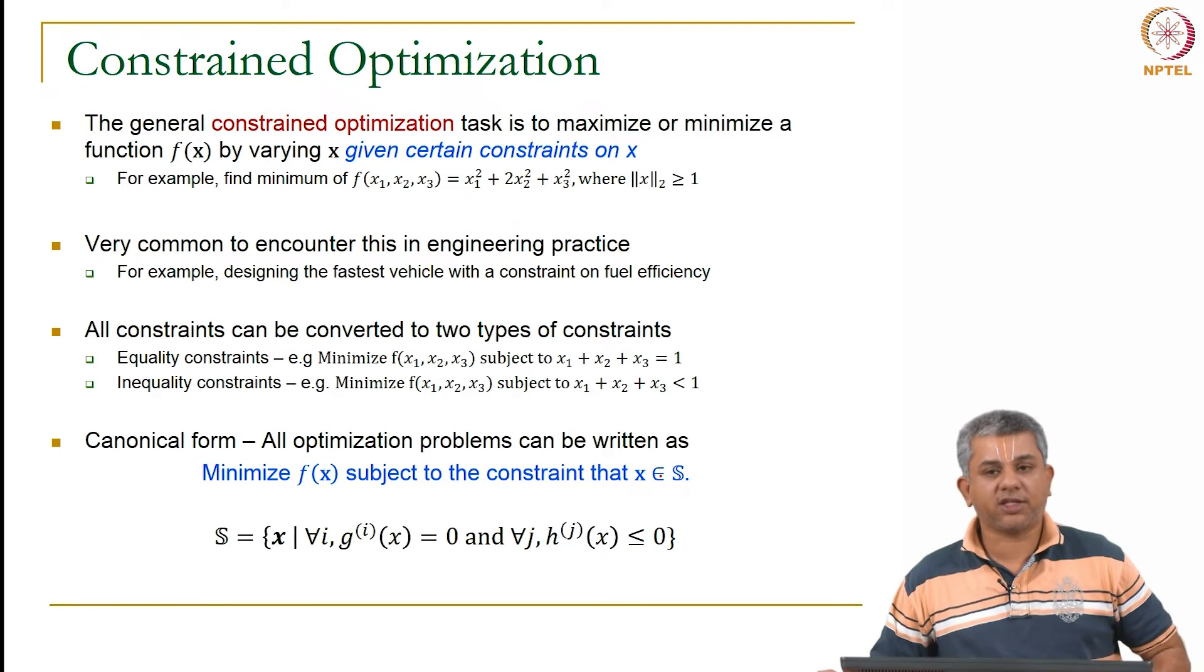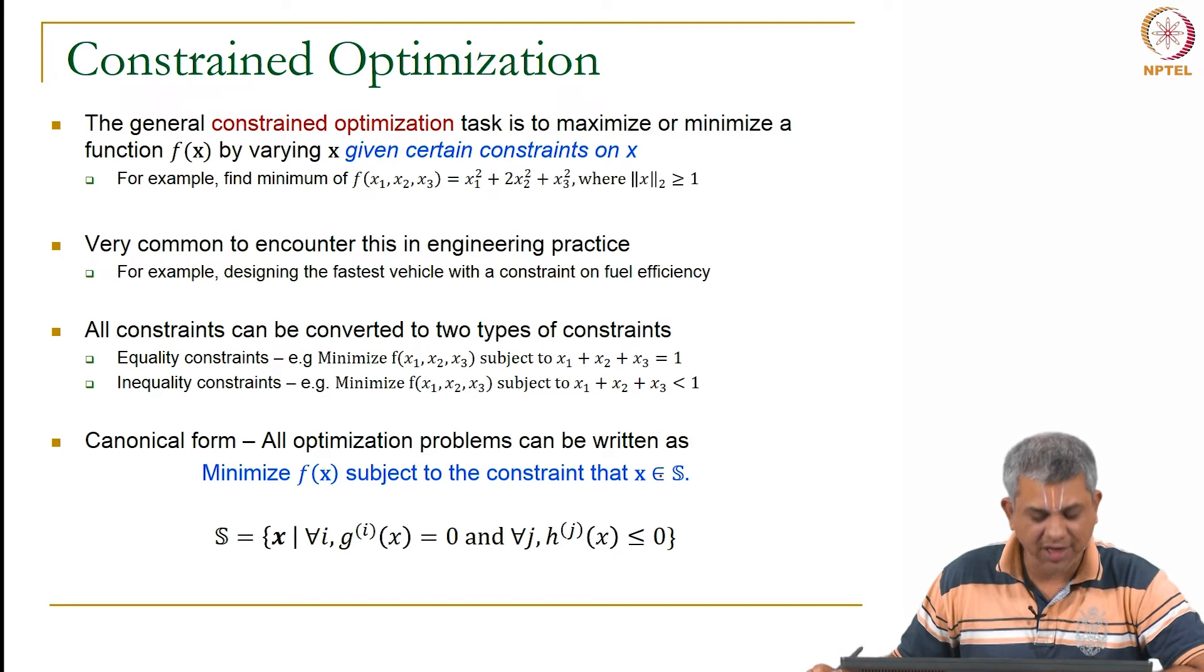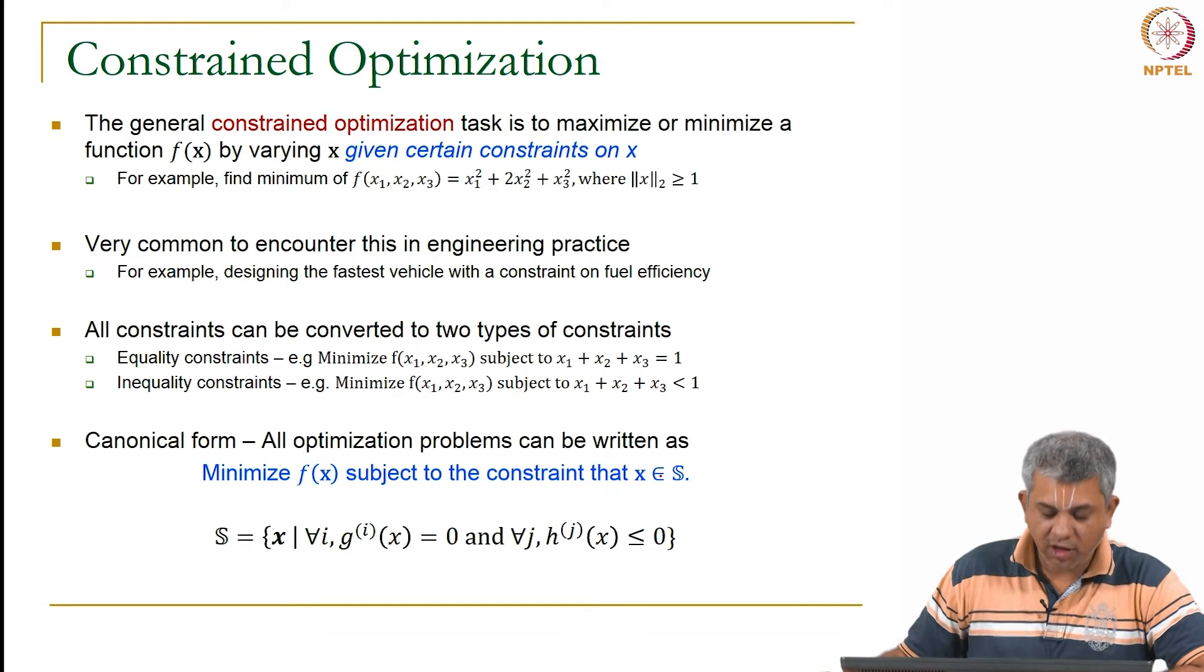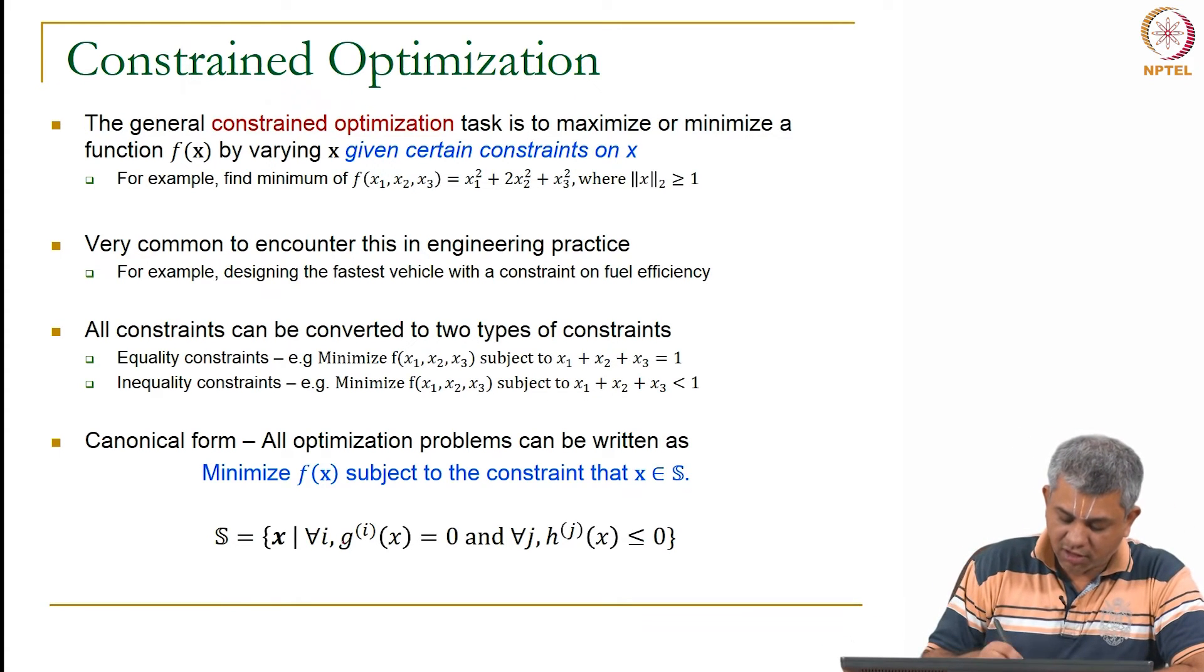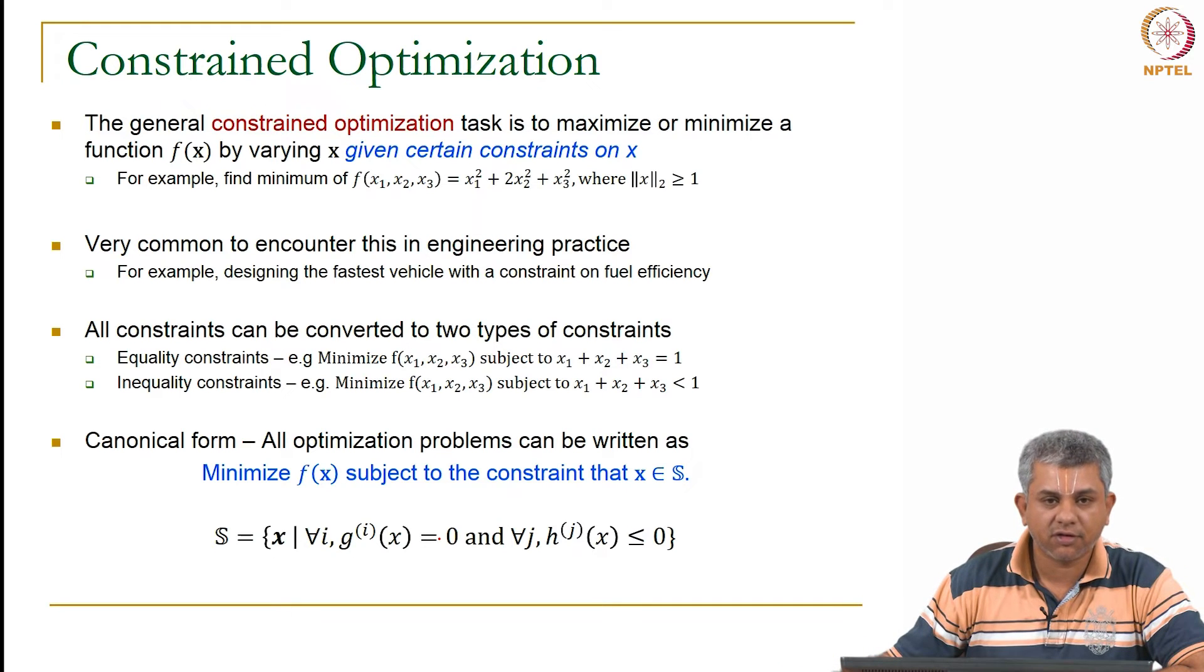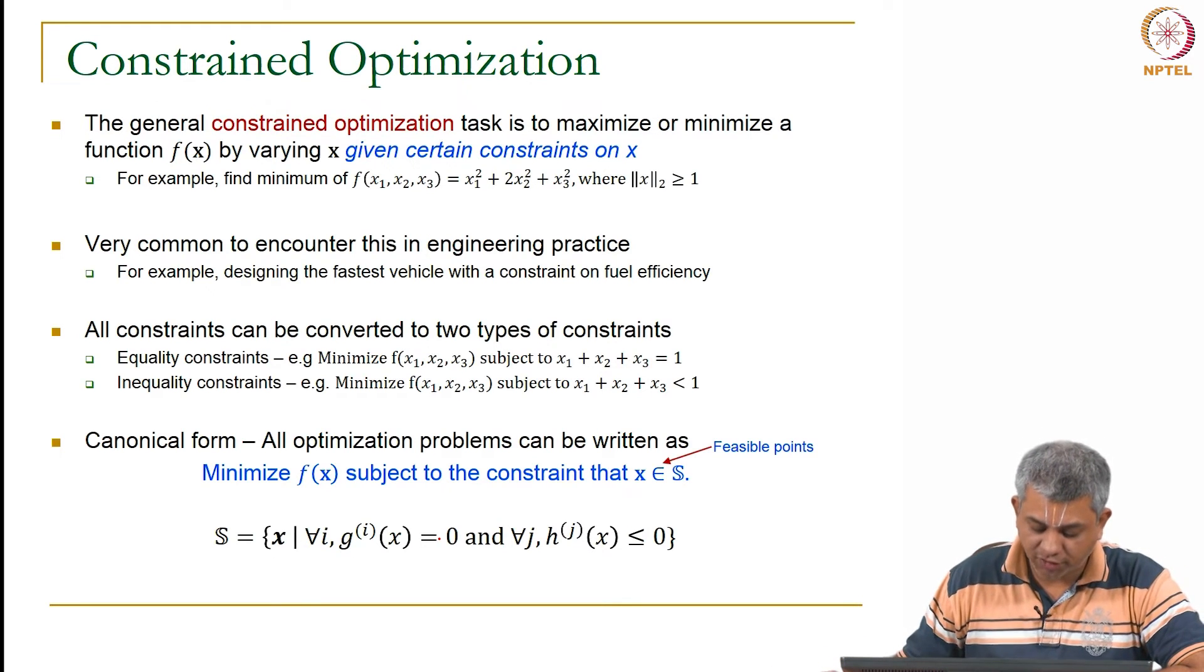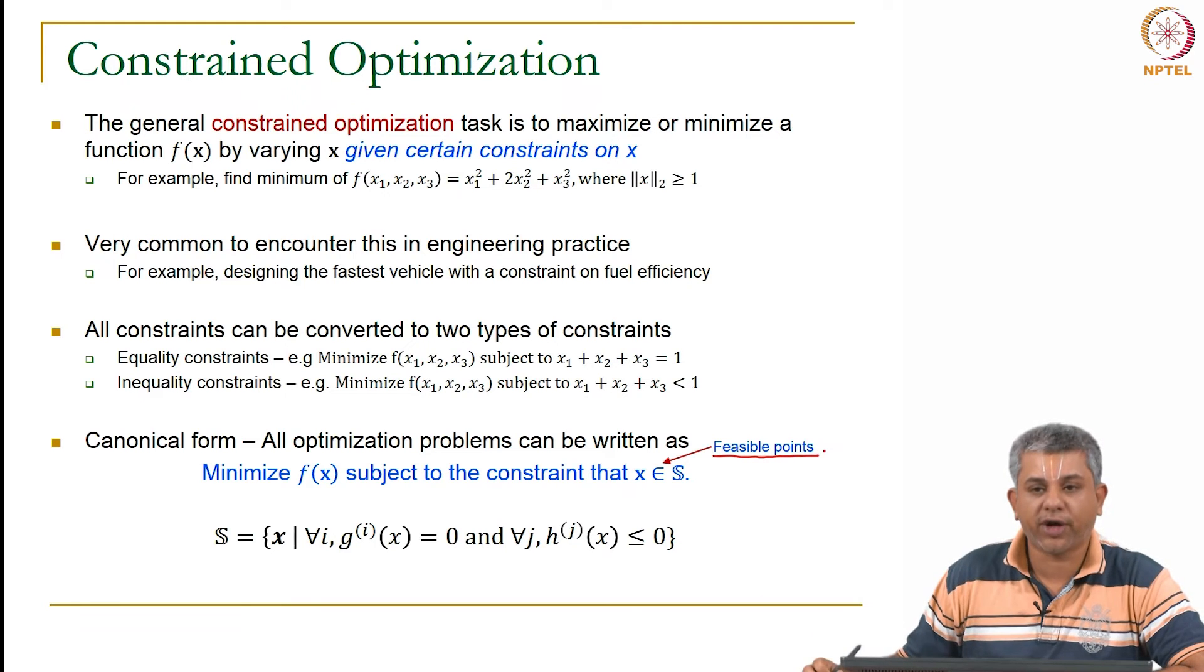So the expression for s will look like this. At first sight this will look quite complicated but it is actually fairly straightforward. Instead of giving one constraint, I will give multiple constraints. Let's say I have a whole bunch of equality constraints and a whole bunch of inequality constraints. This set s, or x which satisfy this constraint, are called feasible points.